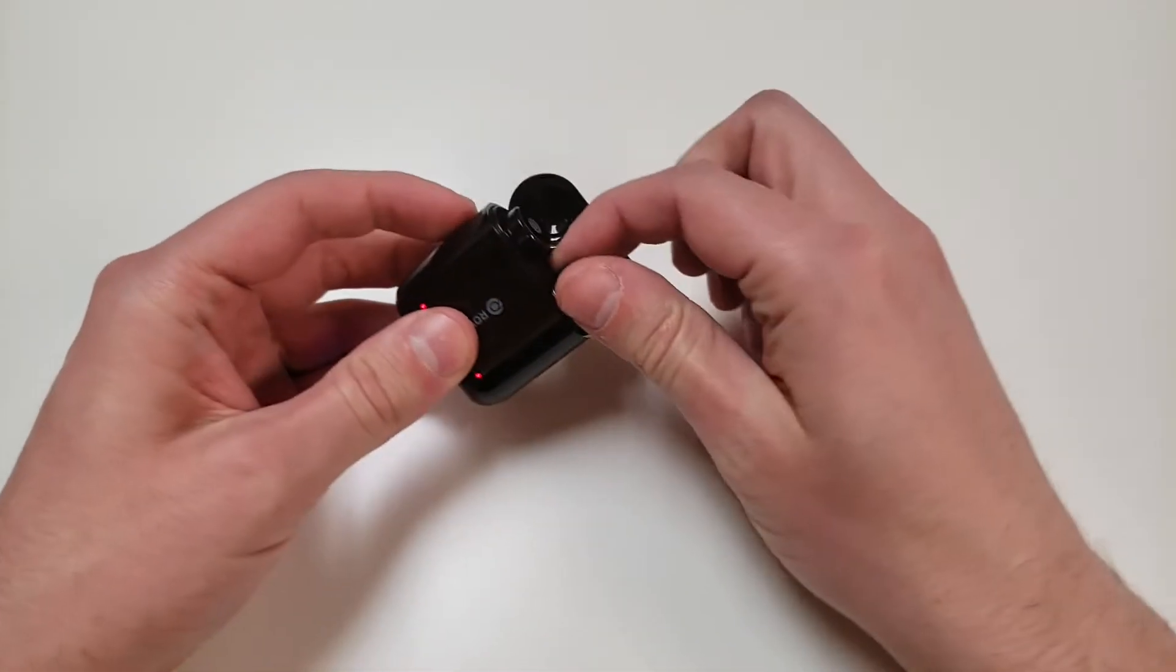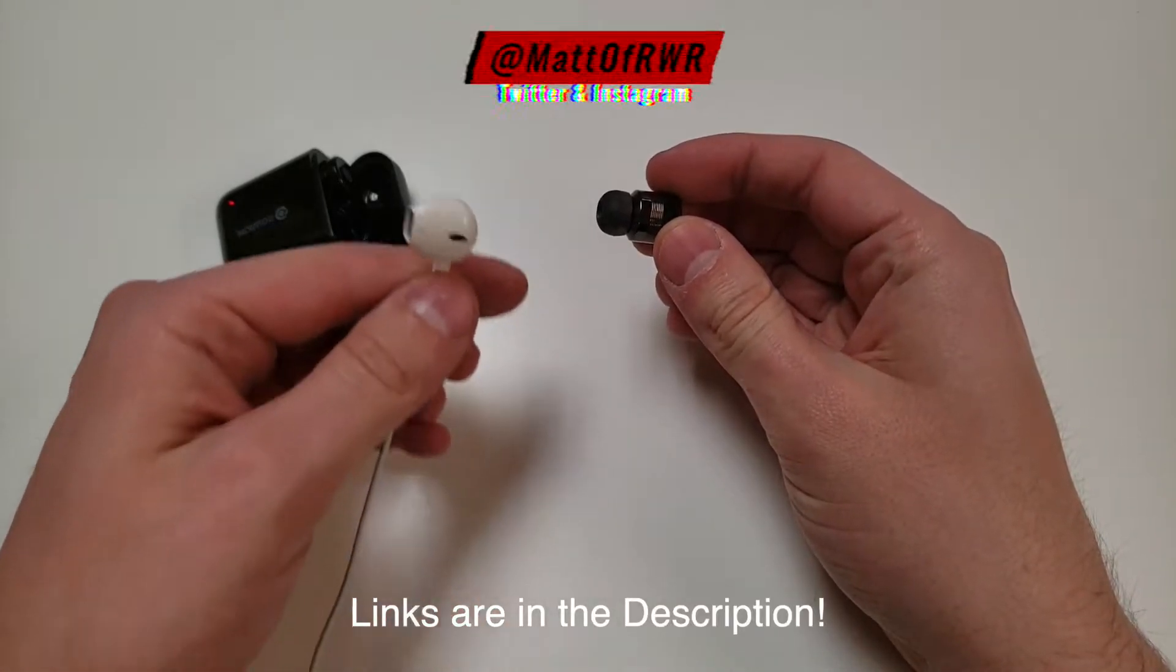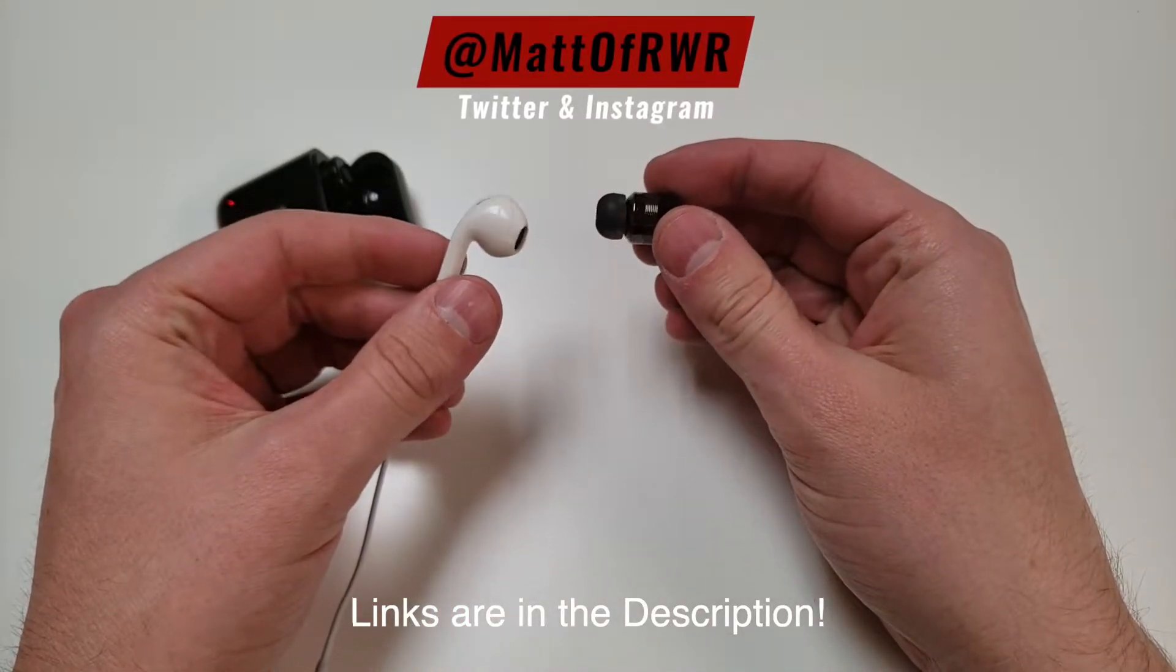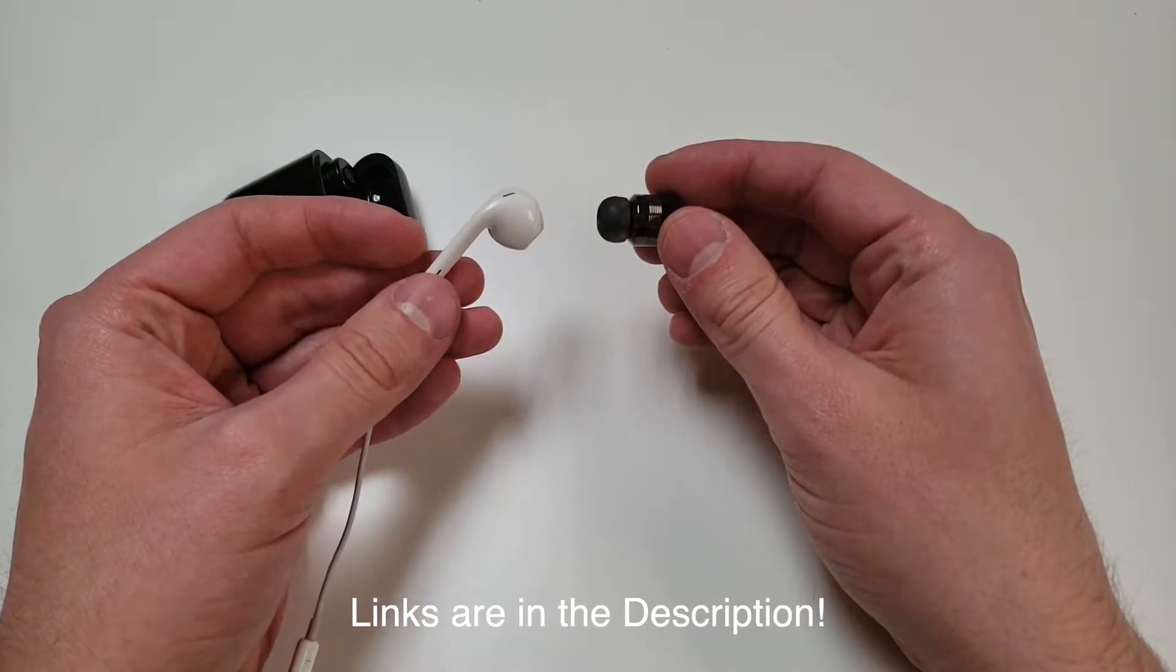Before we go any farther, these are in-ear canal buds, just like all the other buds. In comparison, earbuds like AirPods just sit in your ear, which doesn't help for noise insulation. Now that we got that out of the way, let's move on.